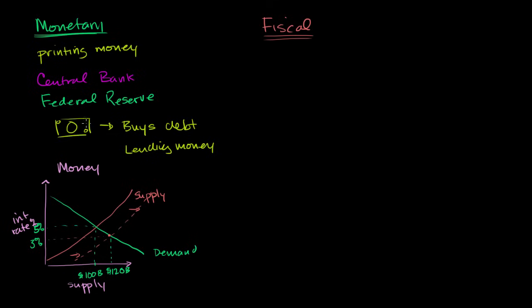So now by essentially printing money, buying debt, increasing the supply of money, two things happened. Interest rates went down. And so now you have all of these characters out here who, before, they weren't going to borrow money at 5% because whatever they were, their benefit on that money was between 5% and 3%. Maybe it was 4% or 3.5%. It didn't make sense for them to borrow at 5% and invest it and only get a 4% return or a 3% return. But now that interest rates have gone down, now it does make sense for them to borrow the money.